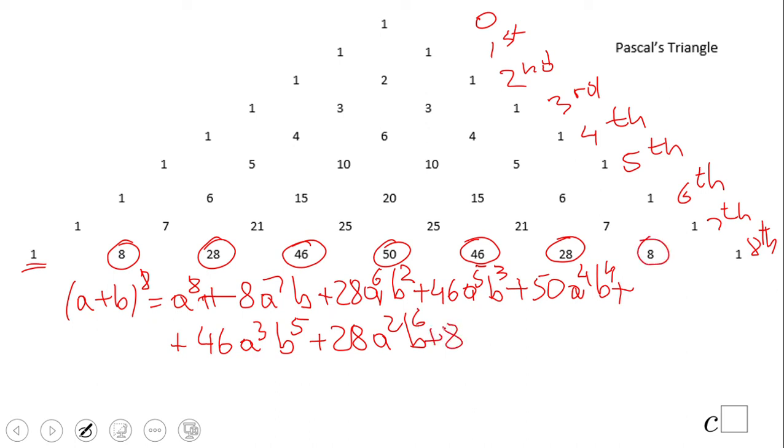Plus 8. 8ab⁷. And the last one, this one, like the first one, is going to be just simply b⁸. This is the expanded form of (a+b) to the 8th power. Very useful if you have Pascal's Triangle handy.